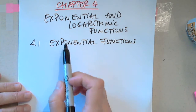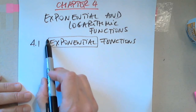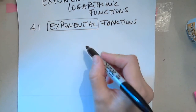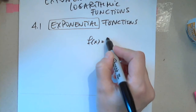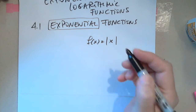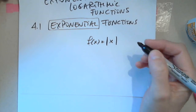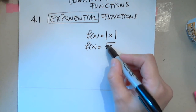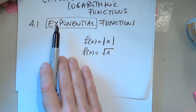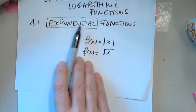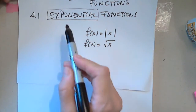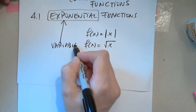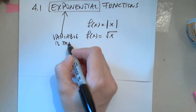What do you think a function could be called exponential? For the same reason we call a function absolute value — it has an absolute value. For the same reason we call a function the square root — because it has a square root. So obviously this has an exponent. The variable is the exponent.